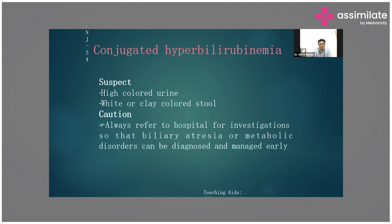When should you suspect conjugated hyperbilirubinemia? Always remember: pale or clay-colored stools and dark urine. Always refer to hospital for diagnosis so that biliary atresia or a metabolic disorder can be diagnosed and managed. Suspect conjugated jaundice when the direct serum bilirubin component is more than 2 mg per deciliter. For clinical signs, look for pale or clay-colored stools or dark urine. It is better to go for bilirubin levels if direct bilirubin is more than 2 mg per deciliter. Always perform an ultrasound scan and check blood sugar to rule out biliary atresia and metabolic disorders for timely management.